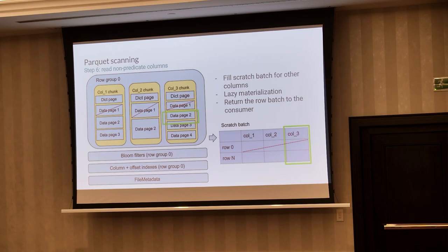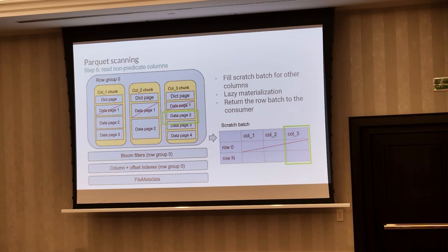There is a compromise in all these optimizations. Because we want to read as little as possible — for example, if there is a bloom filter, we want to check it first, and maybe based on that we don't have to read anything — but at the same time it would also make sense to start reading in parallel. Because if the bloom filter doesn't skip the row group, then we've lost time. This is a bit complex: if we strictly optimize for skipping IO, then we wouldn't be able to read forward as much, and we might be blocked on IO.